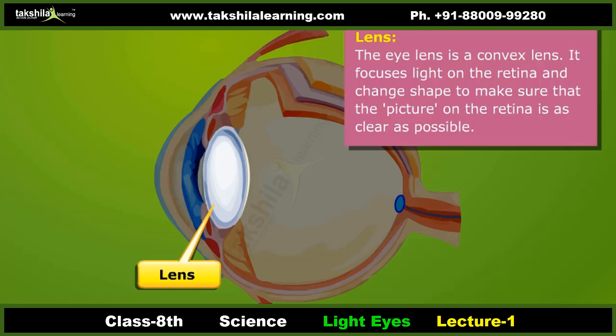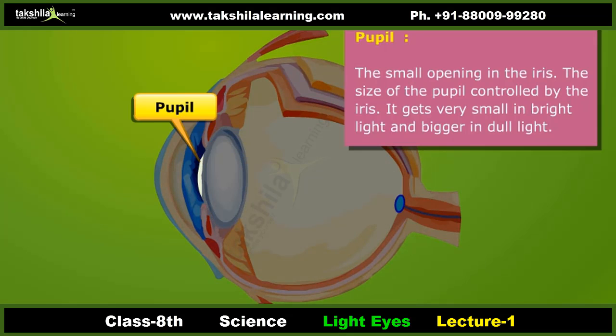Lens: The lens is located behind the pupil of the eye and is transparent. Being thicker in the center, it is a convex lens. It forms an inverted real image of the object on the retina. It changes shape to ensure that the picture on the retina is as clear as possible, similar to the focusing of a photographic camera.